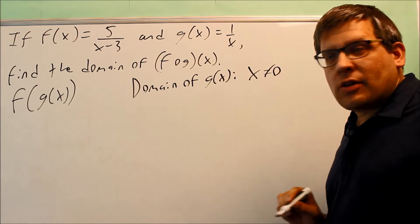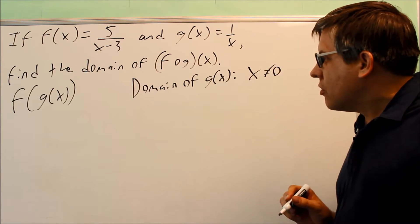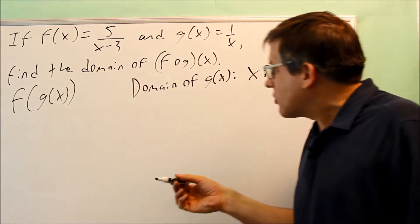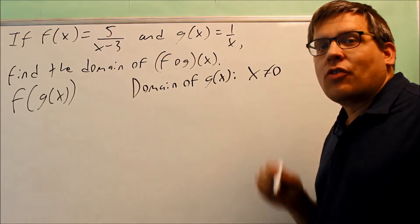So that's actually going to be part of my answer. I'm not allowed to include 0. That's always the first thing you do. So whatever you're putting inside here, inside is g of x, find the domain of that first.